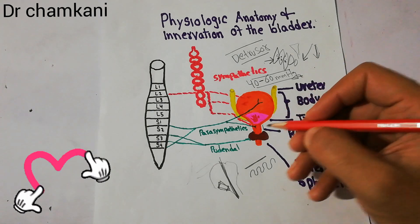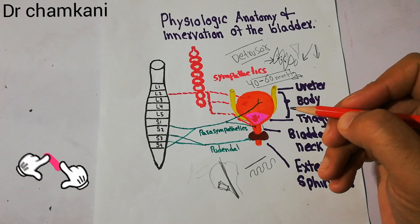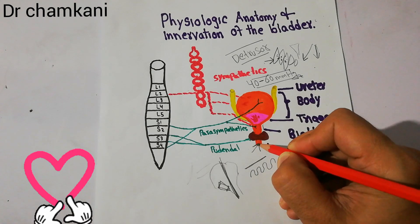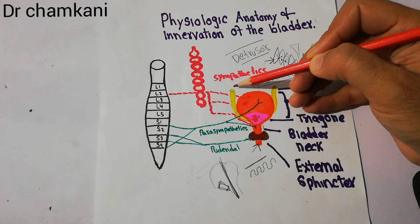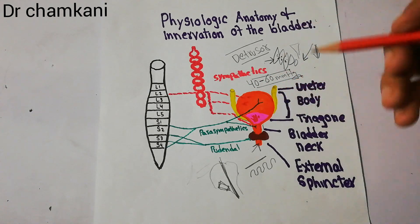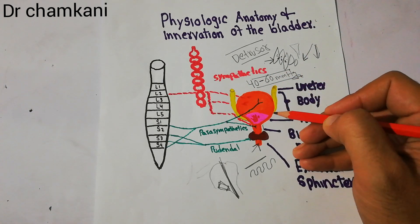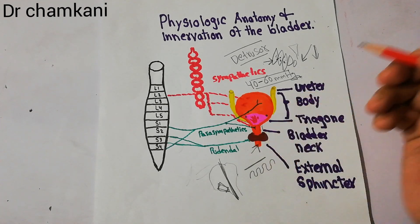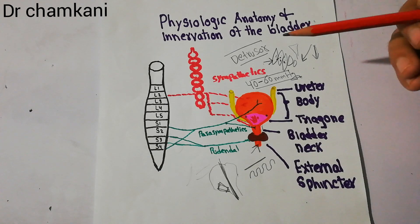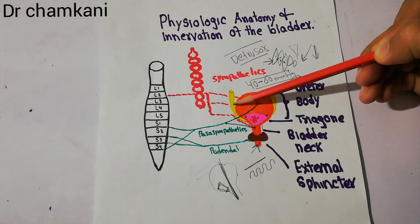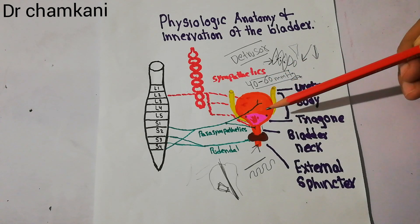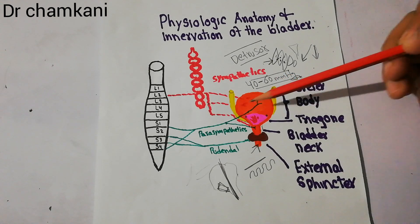Once the bladder neck passes the urogenital triangle, it connects with the urethra. Urine comes to the bladder with the help of two ureters. The ureters, once they enter the bladder, move inside the wall of the bladder for a few centimeters and then open on the posterior side, allowing urine to enter the bladder.